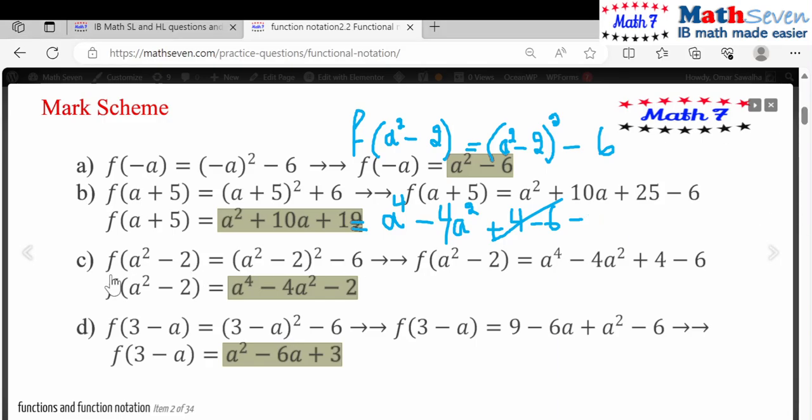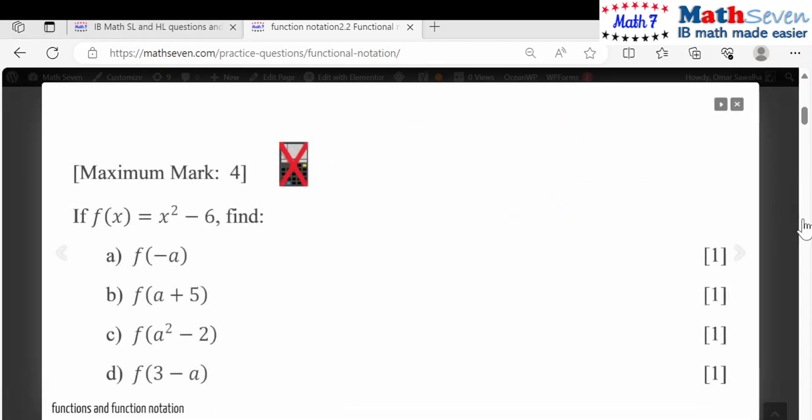And the last one, f of 3 minus a, it simply goes like this. Substitute instead of x squared its value which is 3 minus a. So this will go like this, 3 minus a all squared minus 6.